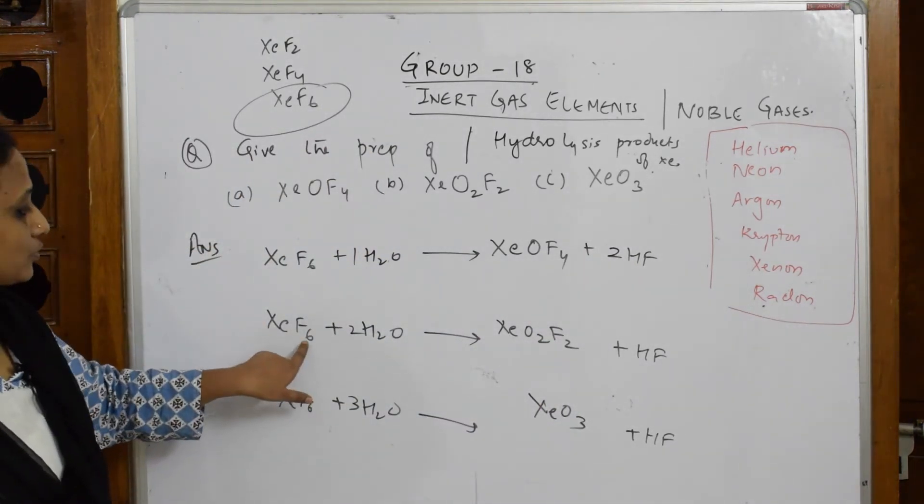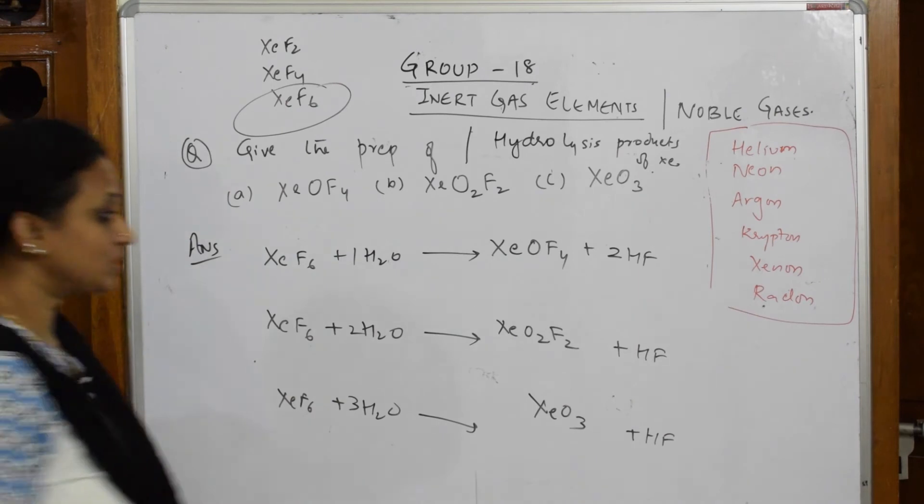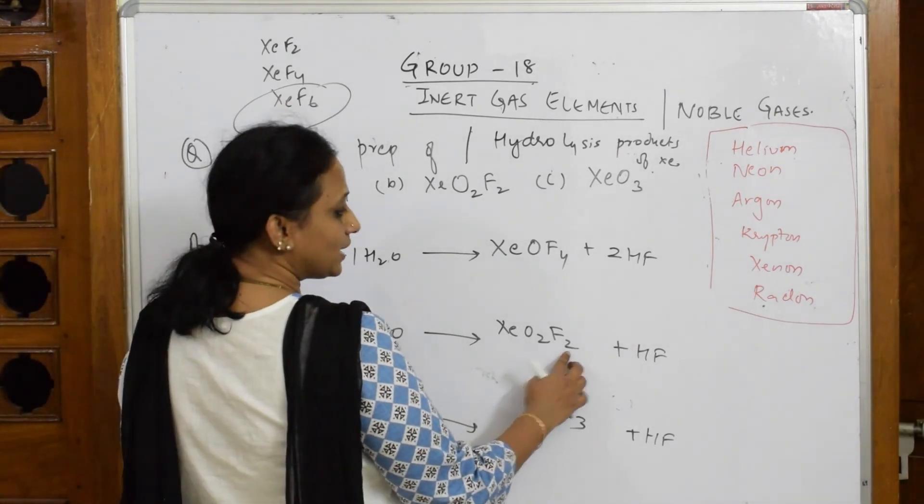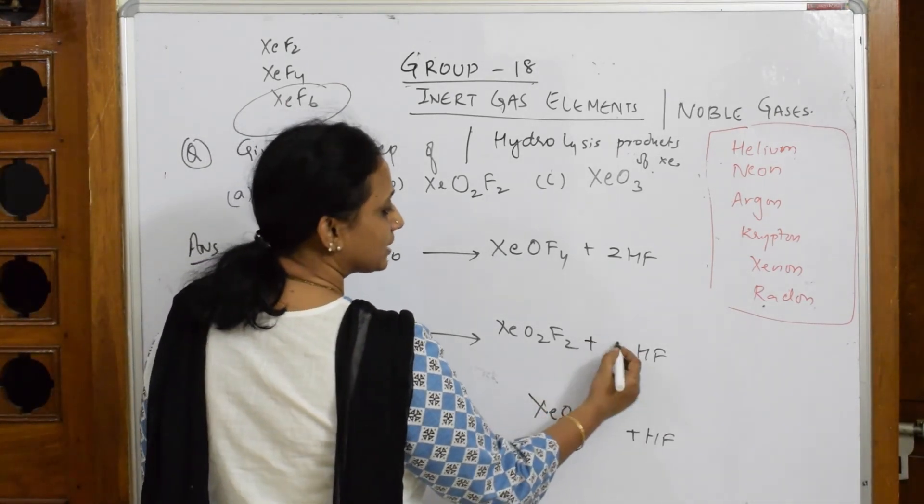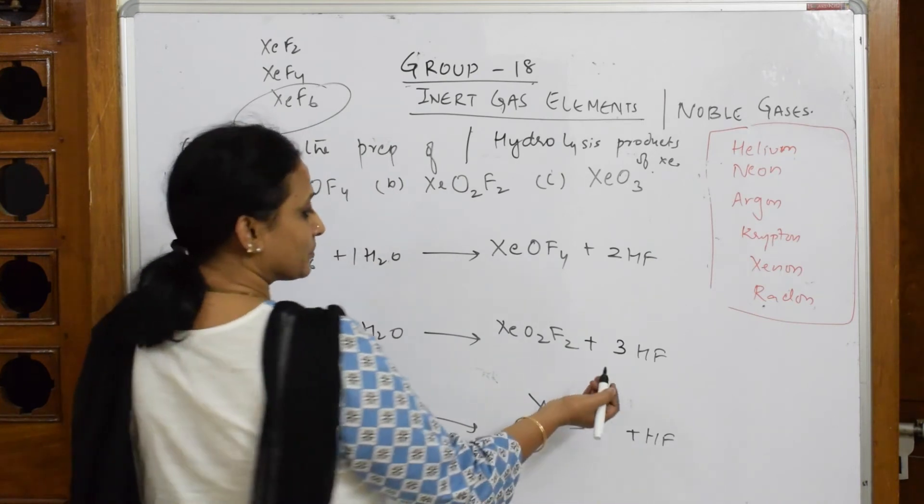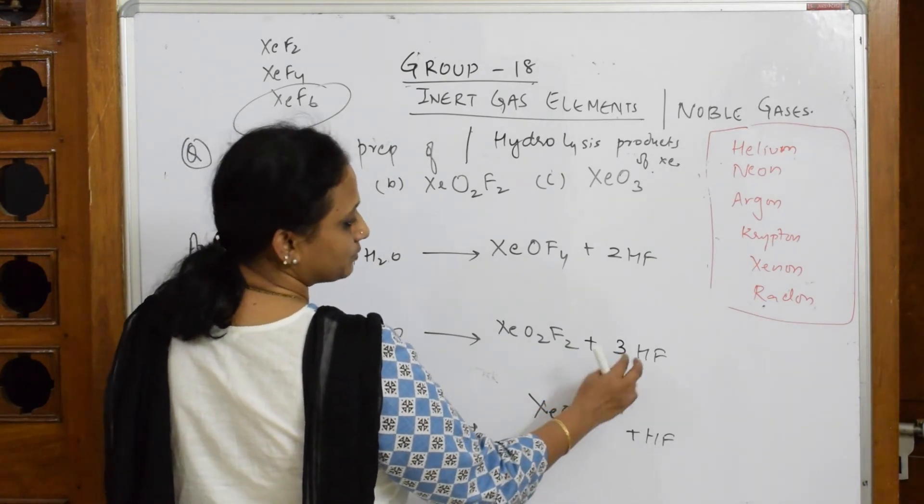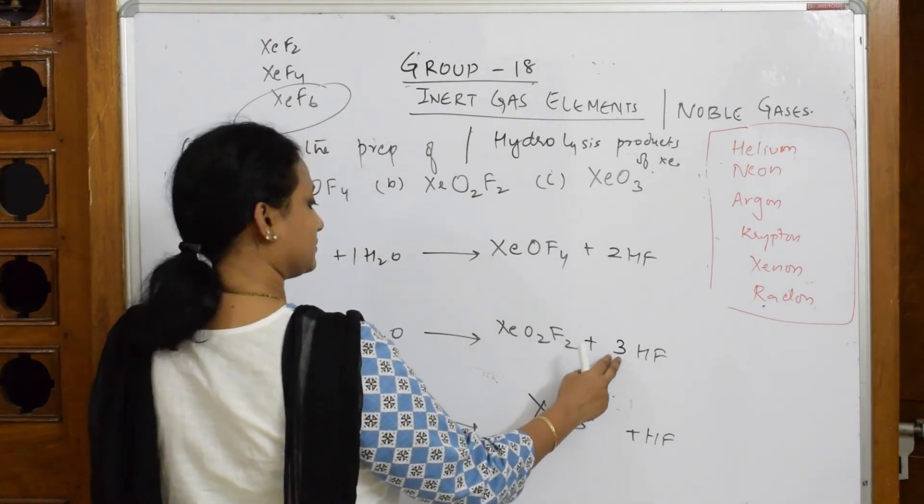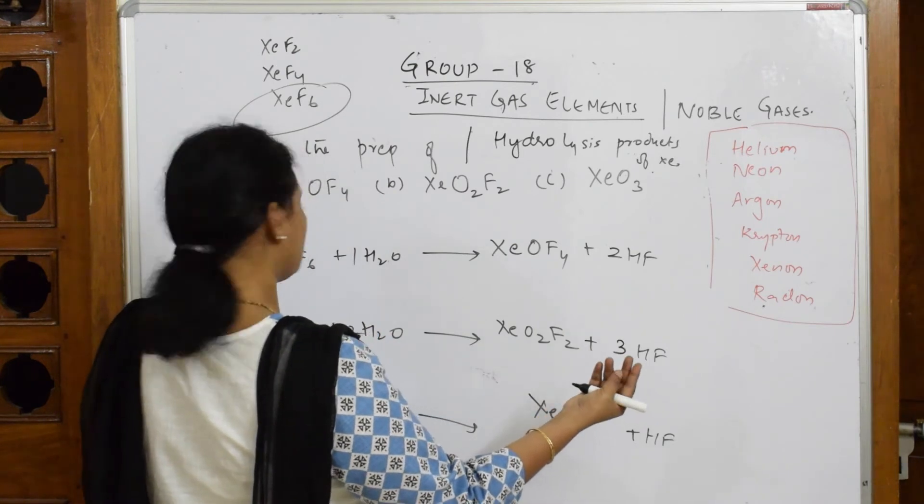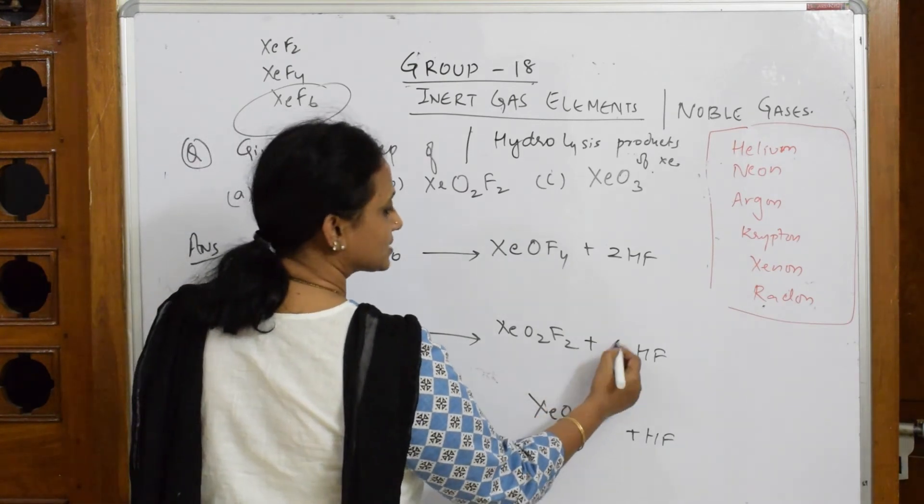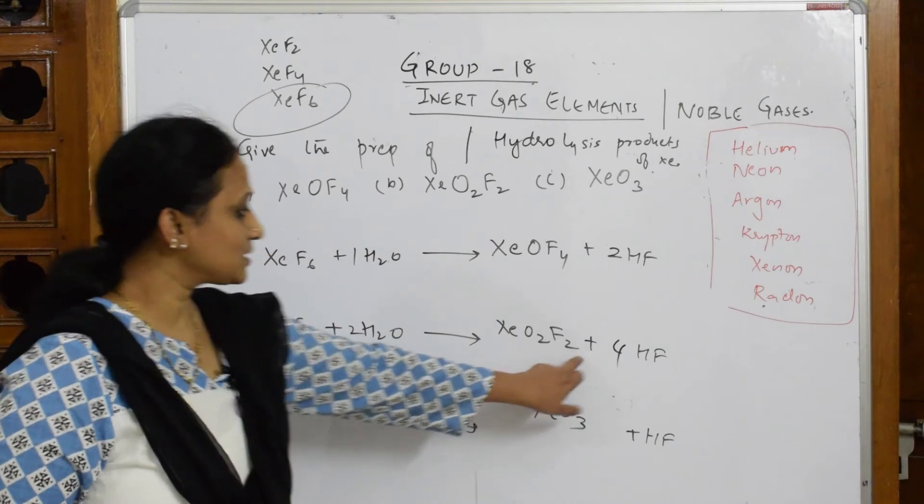Here, fluorines are six. Here, there are two fluorines and three, so I can make three. If I have to make three, I can write four. Four plus two is six, so six fluorines, hydrogen two to four, so four done.